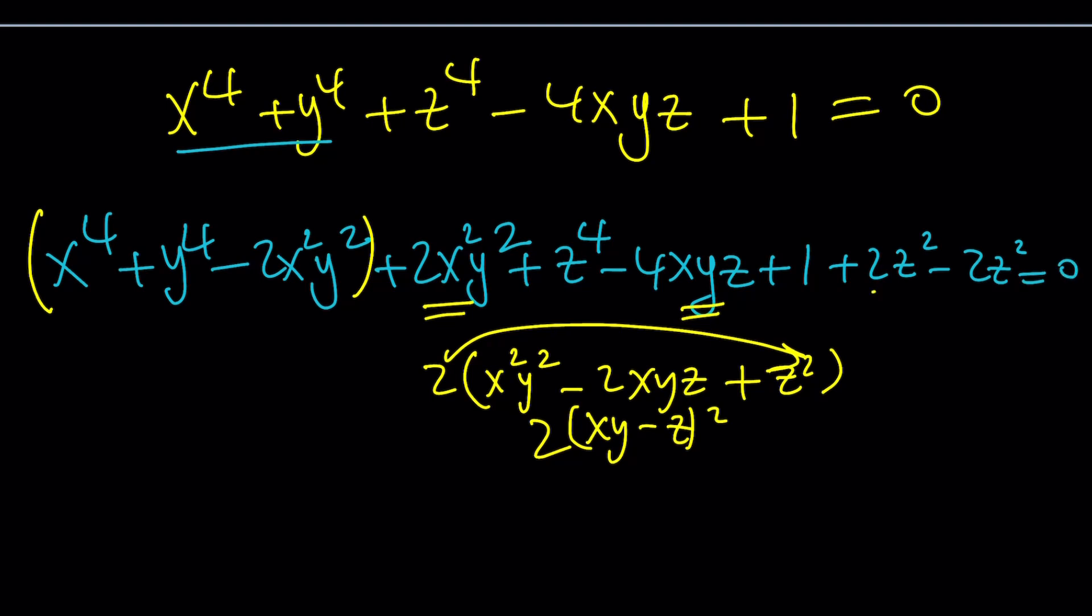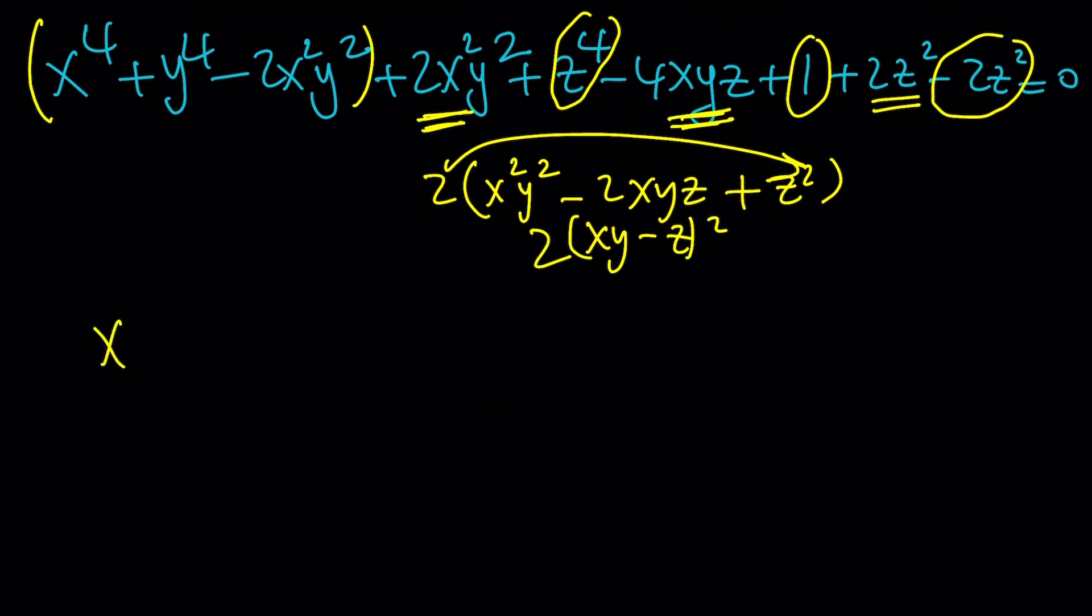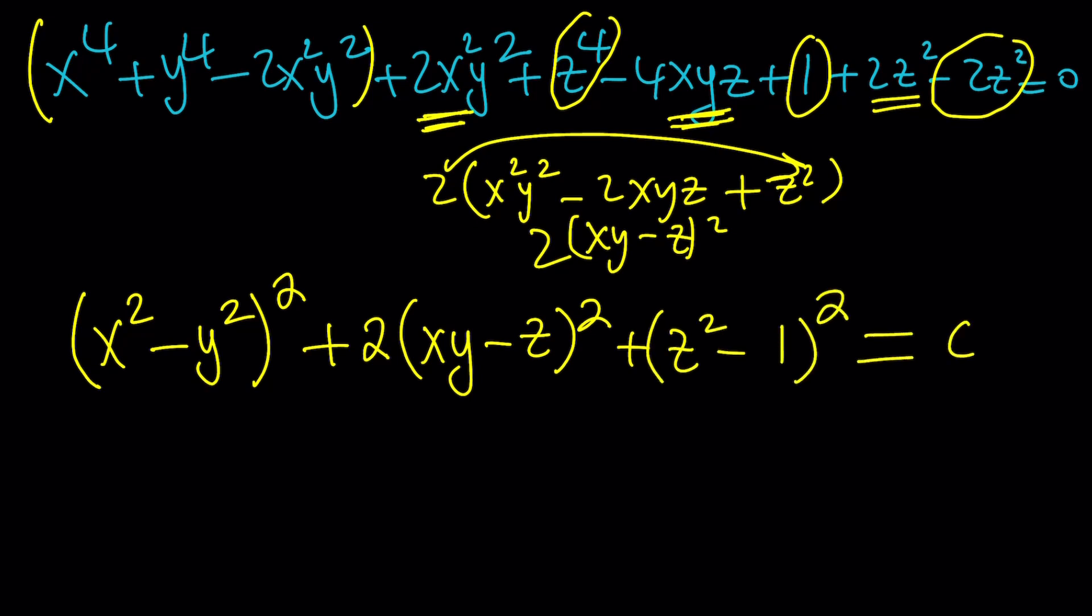But now here's what we're going to do. We're going to go ahead and use these three things to make another perfect square. And guess what? Everything else will also make a perfect square. And isn't that perfect? Now let's see what happens. This one is x squared minus y squared quantity squared. And then the next three expressions is going to be 2 times xy minus z squared. Remember, we just talked about it, right? And then the rest is just going to be z to the fourth minus 2z squared plus 1. And isn't that z squared minus 1 quantity squared?